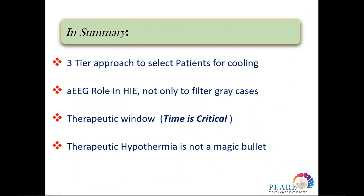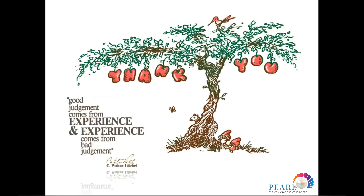In summary: the three-tier approach is used to select patients eligible for cooling. The use of amplitude-integrated EEG in hypoxic ischemic encephalopathy goes beyond filtering gray cases. The therapeutic window is crucial — when we say six hours, the earlier the better. Regarding counseling parents, we must always let them know that therapeutic hypothermia is not a magic bullet, and that sometimes sequelae in the future may still be the end result. Thank you very much.